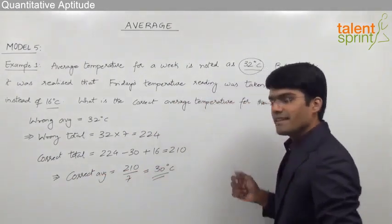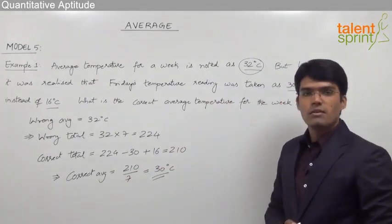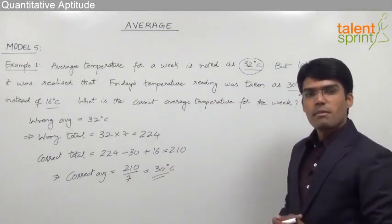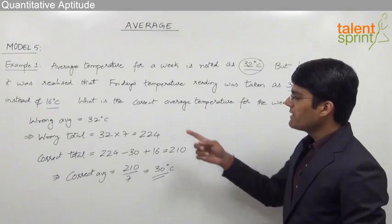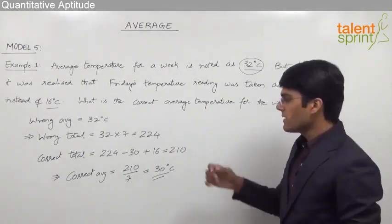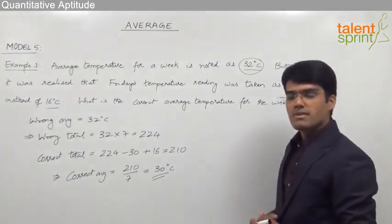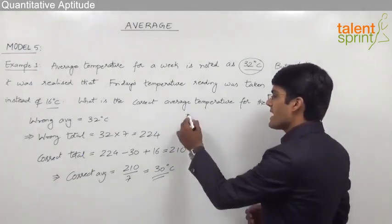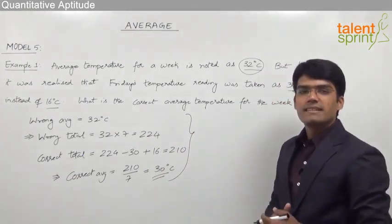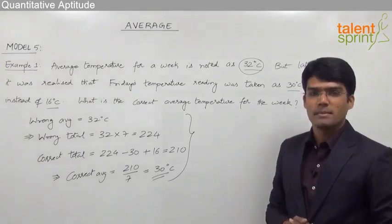The correct average of the week is 30 degrees. However, solving the question this way takes a lot of time as it involves 3 to 4 steps. Let us understand how to solve this in just one single step.